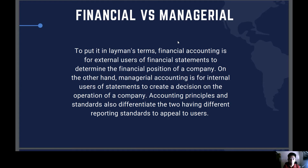To put it in layman's terms, financial accounting is for external users of financial statements to determine the financial position of a company. On the other hand, managerial accounting is for internal users of statements to create decisions on the operation of a company. Accounting principles and standards also differentiate the two, having different reporting standards to appeal to users.